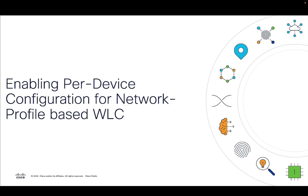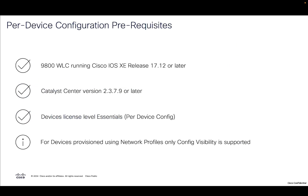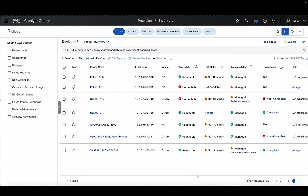Now let's take a look at how to enable per device configuration for a network profile-based wireless controller. There are some prerequisites before you can start using this feature. First, make sure your 9800 wireless controller is running IOS-XE release 17.12 or later. Catalyst Center version should be 2379 or later. For device licenses, we support essential license onwards. For devices provisioned using network profiles, we only support config visibility today.